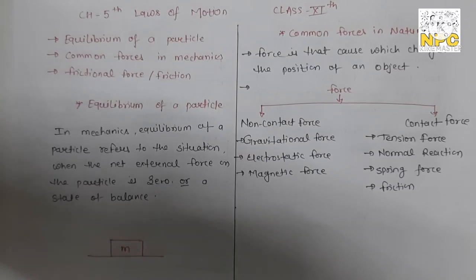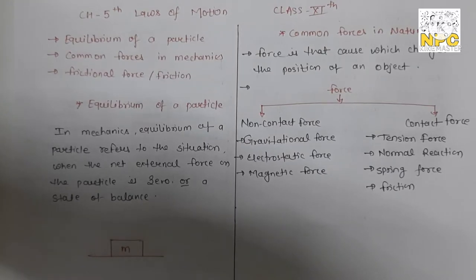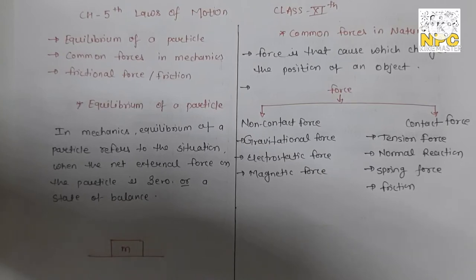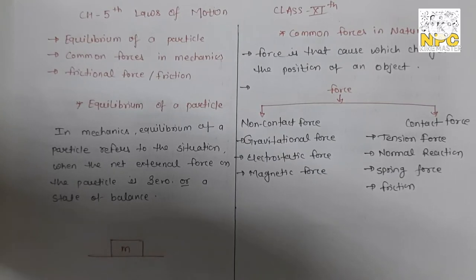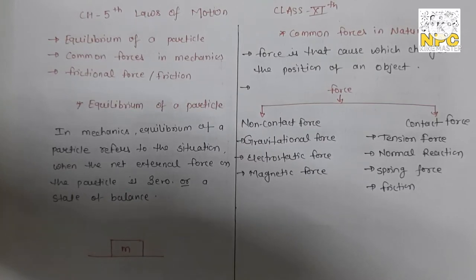Equilibrium of a particle. The simple meaning of equilibrium is balance. In mechanics, equilibrium refers to a situation where the net external force on the particle is zero — in other words, a state of balance. All forces cancel out.